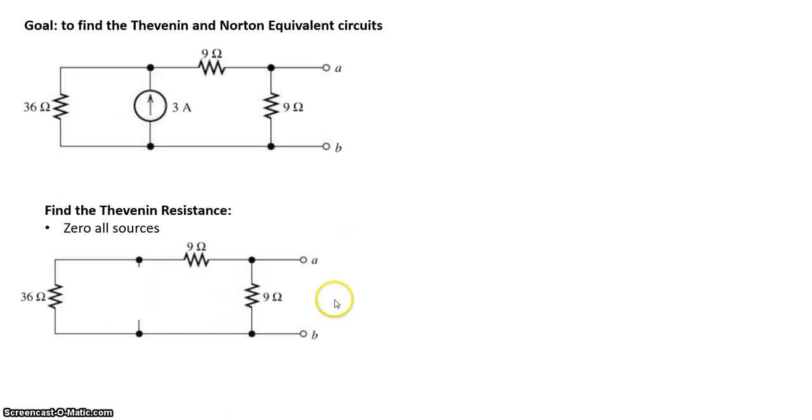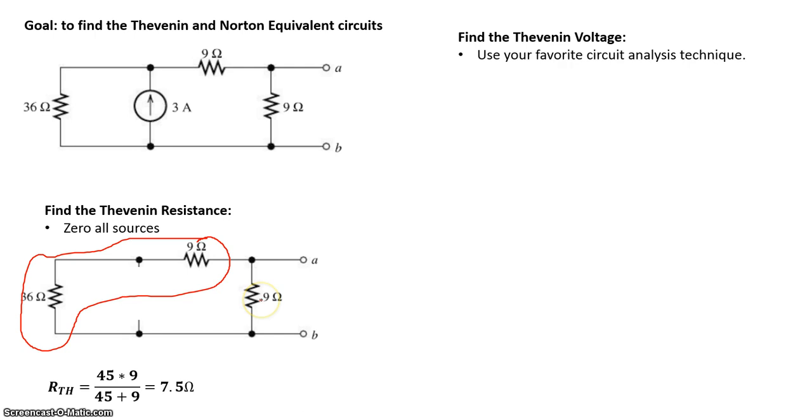Now on this circuit, looking from terminals A and B, our goal is to figure out the resistance seen from there. So we have 9 ohm in series with 36 ohm, that gives us 45 ohms. Now this total network of 45 ohms is in parallel to this 9 ohm resistance. So we can write the circuits in parallel: 45 times 9 divided by 45 plus 9 gives us 7.5 ohms.